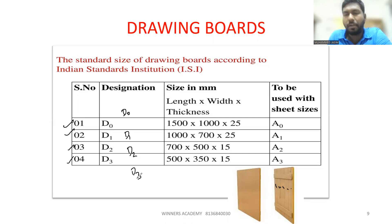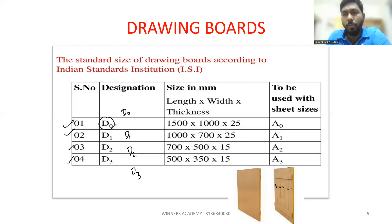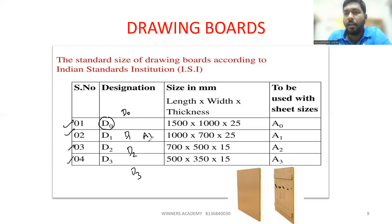The drawing board designations are D0, D1, D2, and D3. D0 is the first drawing board size. The corresponding paper sizes are A0, A1, A2, A3, and A4. The D0 drawing board accommodates A0 paper. D1 accommodates A1 size paper. D2 accommodates A2 size paper.